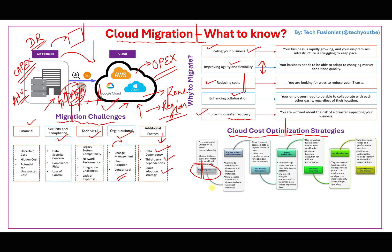Whenever possible, go with reserved instances or spot instances. Pay-as-you-go seems convenient but is a bit costly across all cloud providers. If you are certain about your configuration and duration of use, you can commit to a one-year or three-year term to get a higher discount.